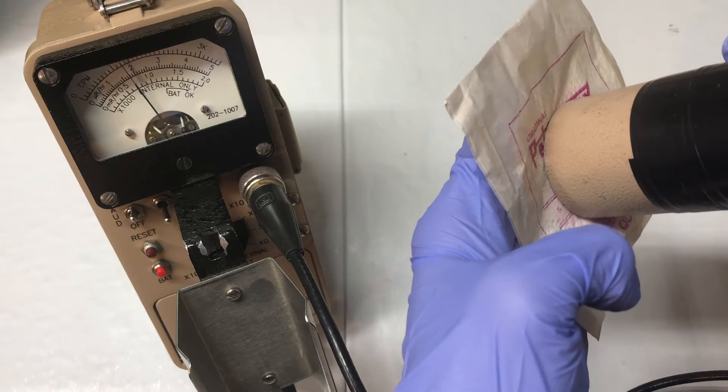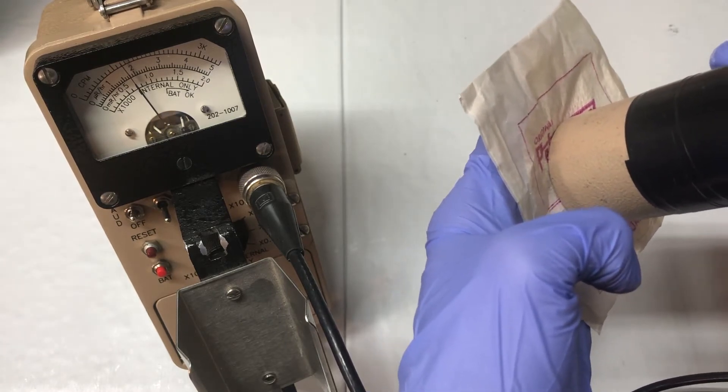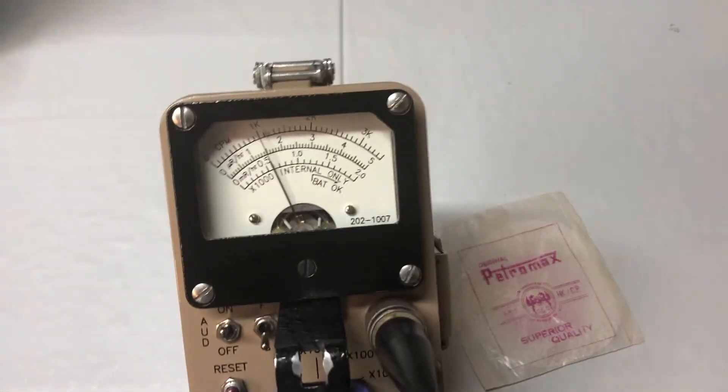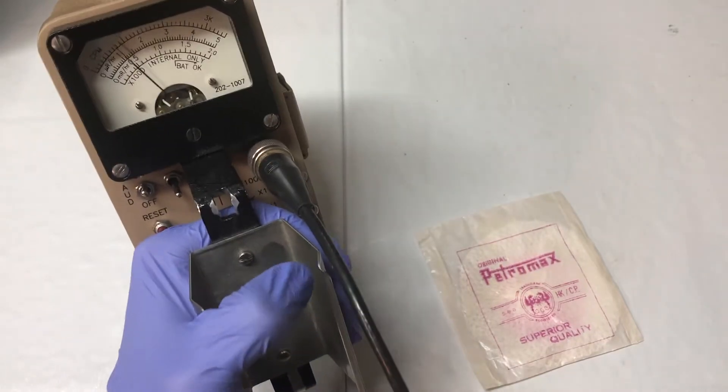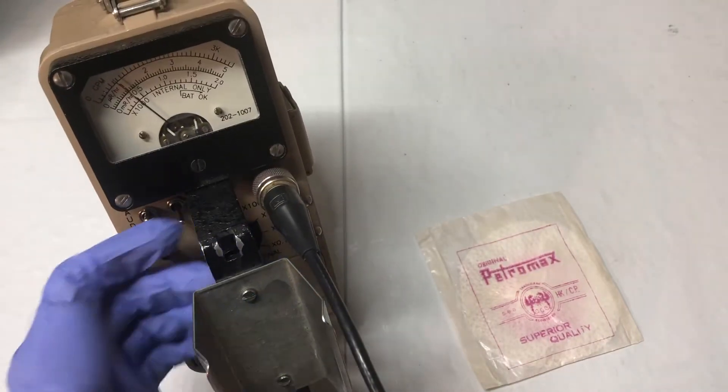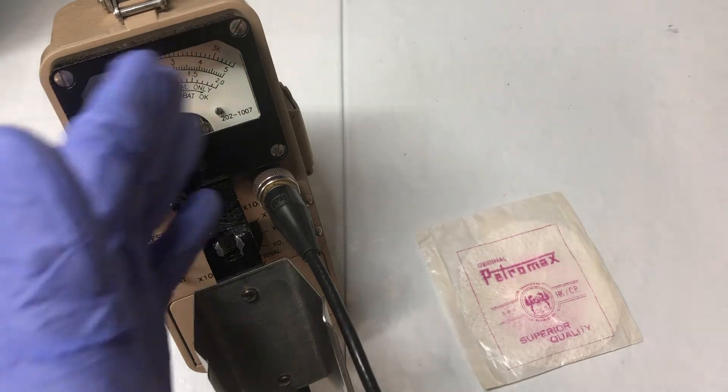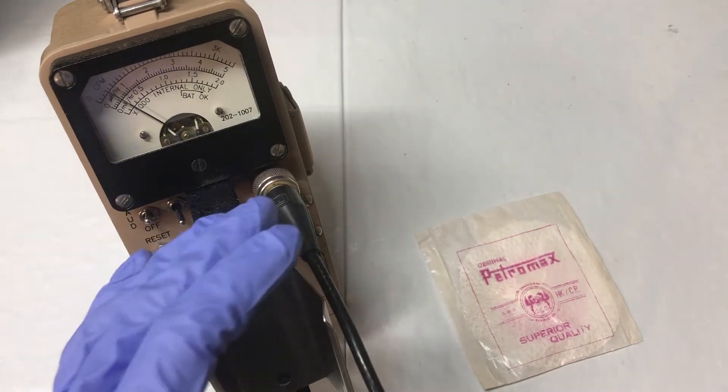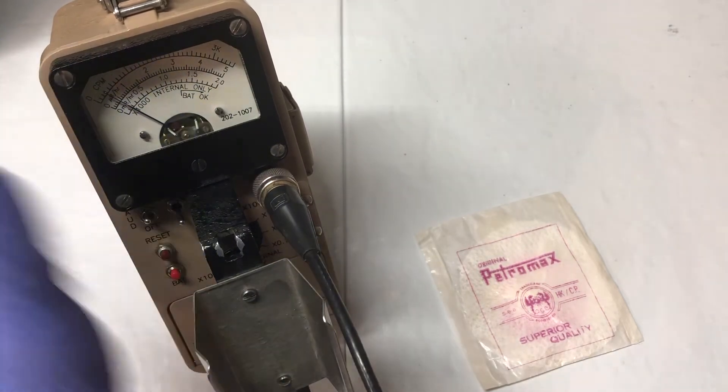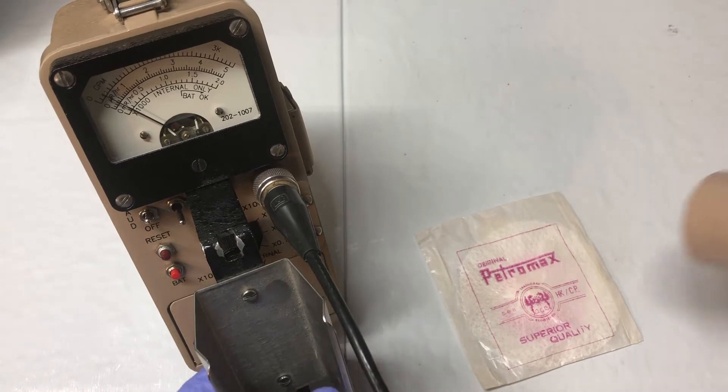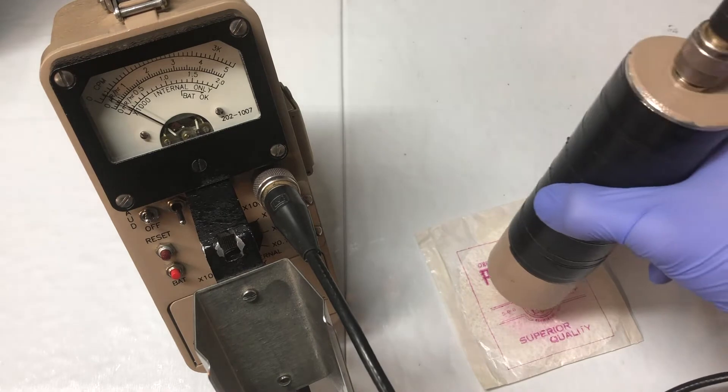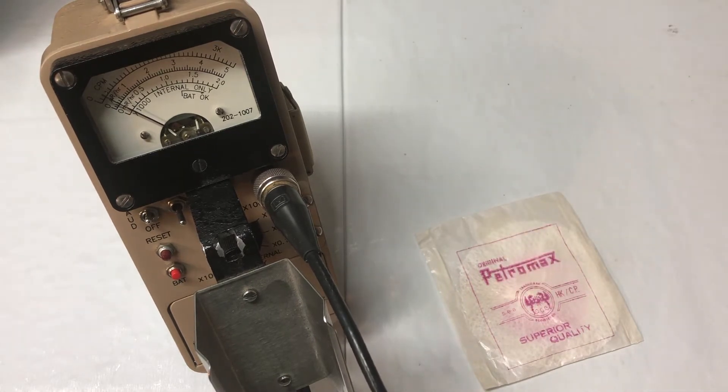It's slowly at around 13,000 counts per minute. Now it's on the times 10 setting, so we take the reading shown and multiply it by 10. Vice versa for times 0.1 or times 1—it's direct reading. Times 10 multiplies by 10, times 100 by 100, and times 1000 moves to the bottom line which is just the internal GM tube. You can hear as I move it closer, the clicks get louder and more rapid, and as I move it away, the clicks get less.